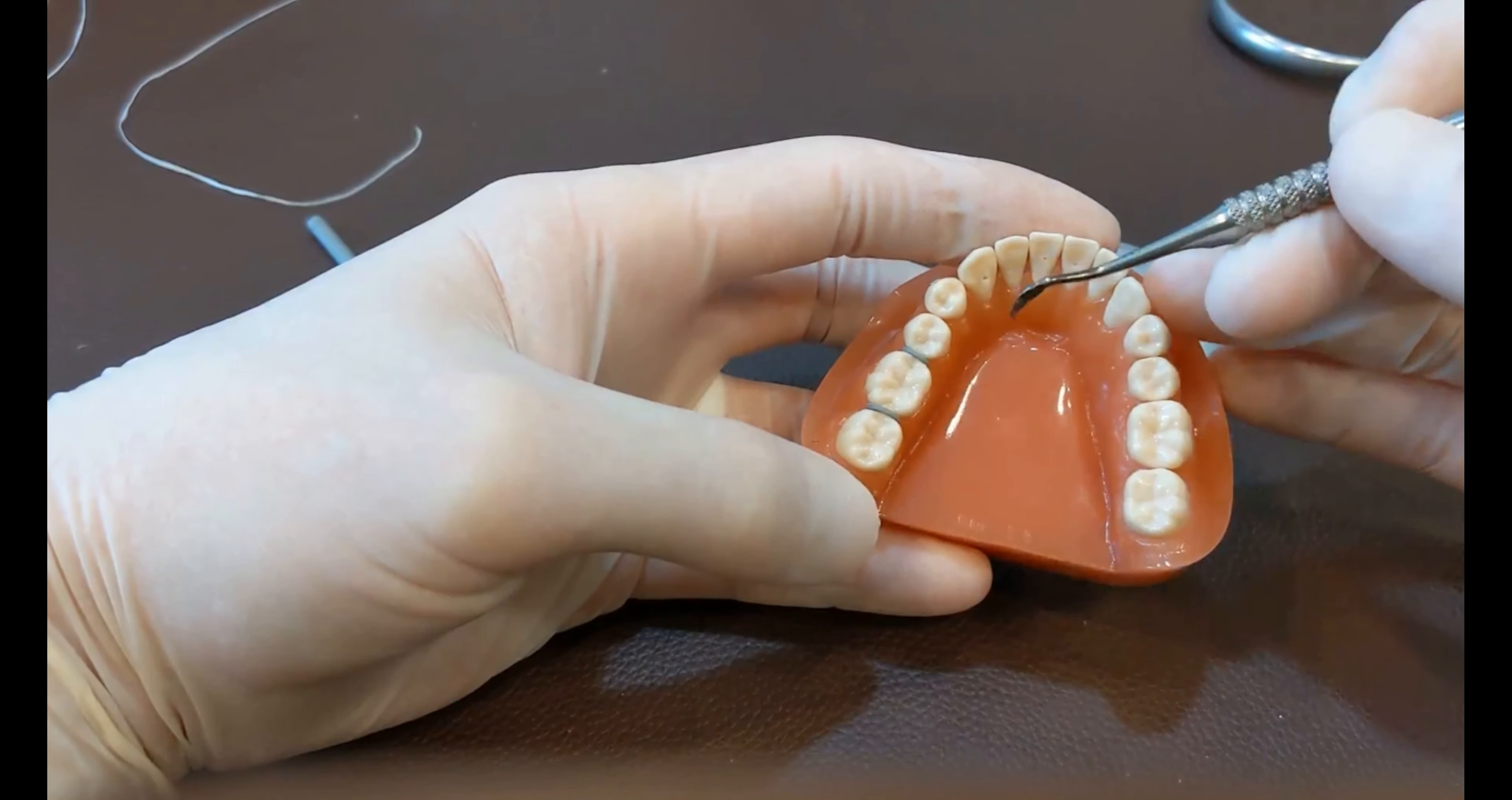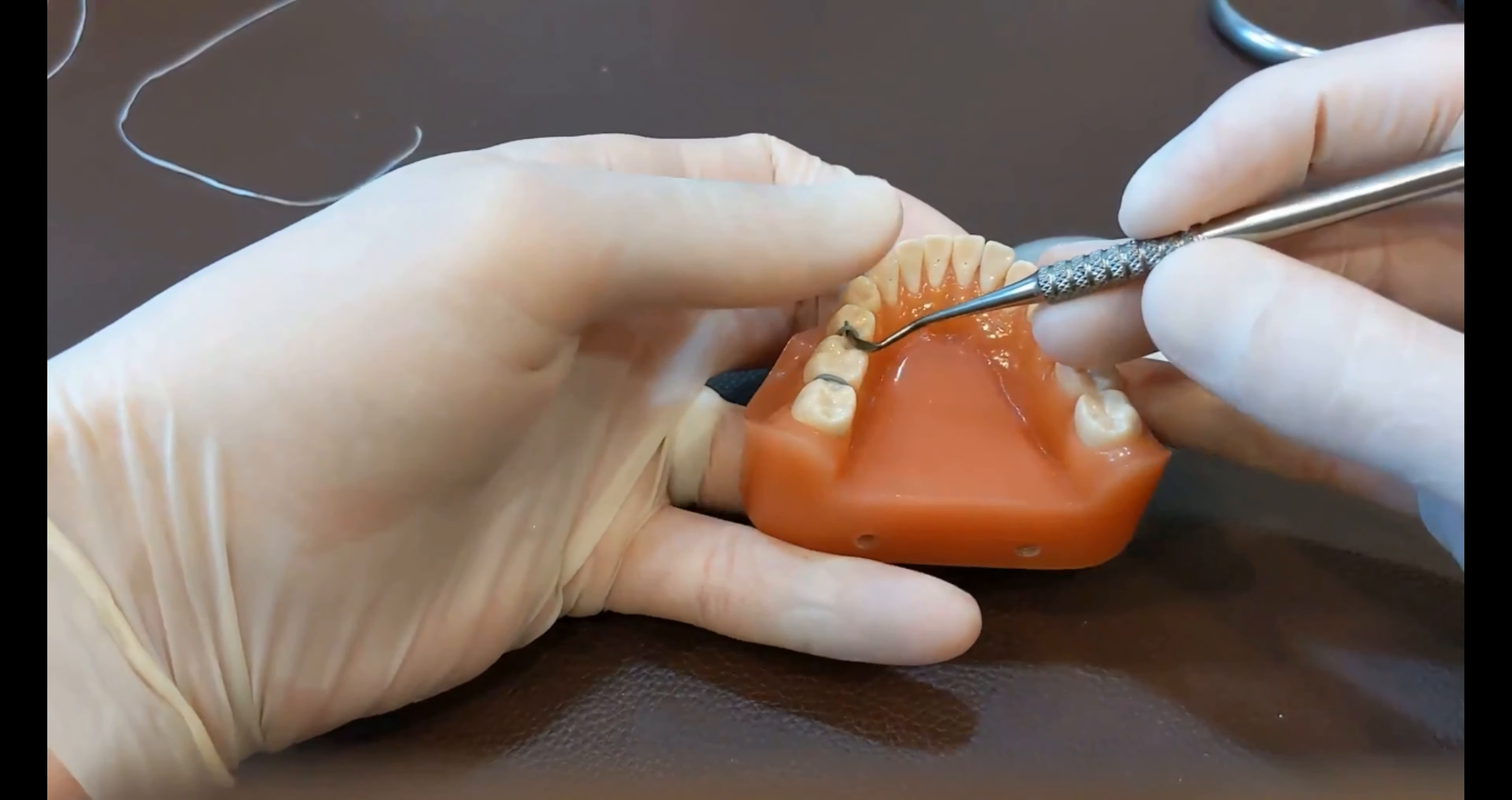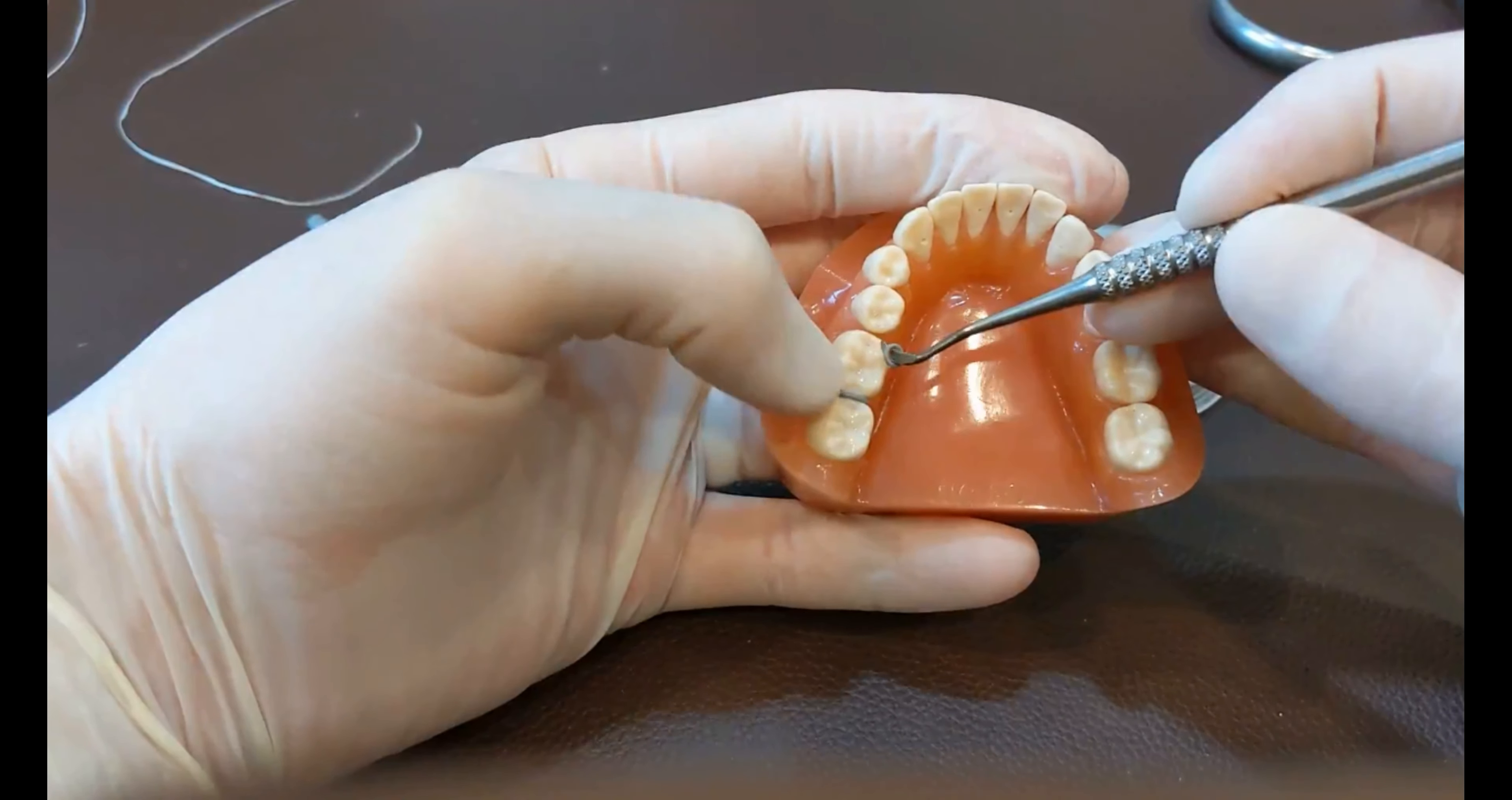To remove a separator, you'll get your explorer in here, and you just kind of wheedle it under there until you get it under the edge, and then you just pull straight up. And I usually put my thumb here so that it doesn't go flying across the room or get lost in their mouth. And then you should see a gap right there where that separator is at, and then you can fit your band on there nice and easy.